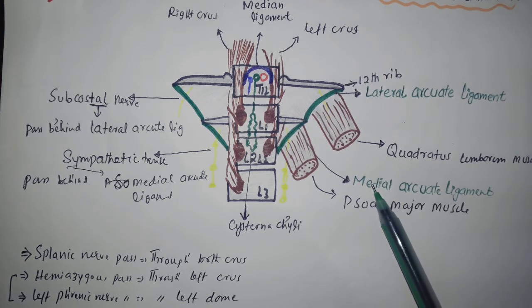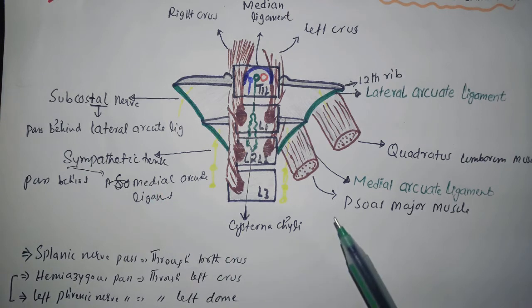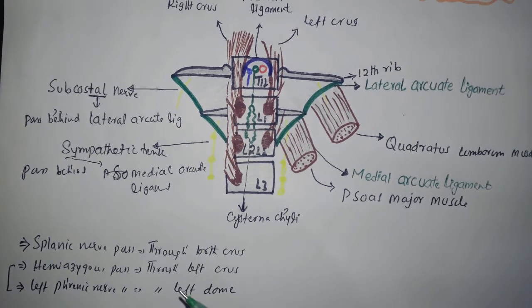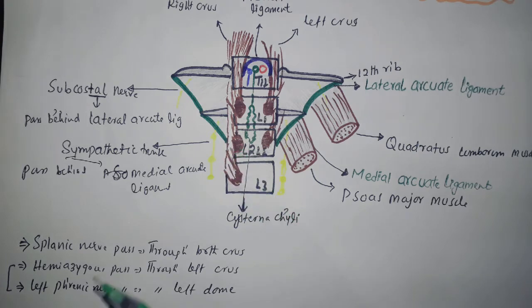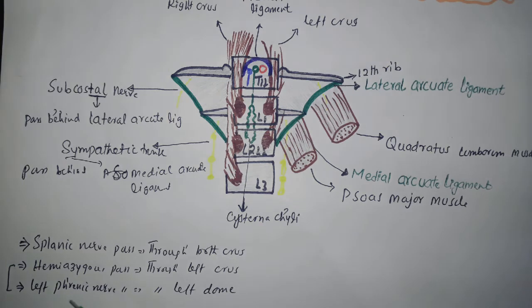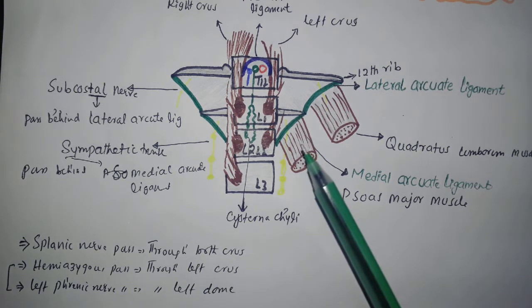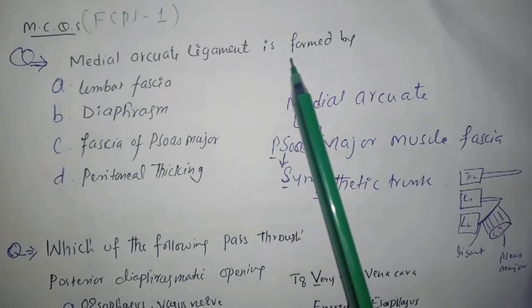The splanchnic nerve passes through the substance of both the right and left crura. The hemiazygos vein passes through the left crus, and the left phrenic nerve passes through the left dome of the diaphragm.